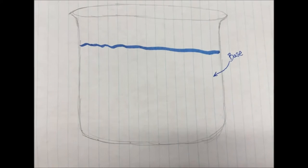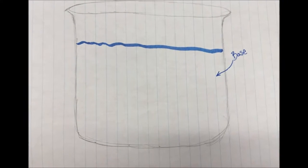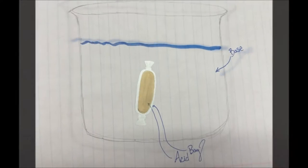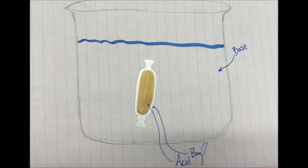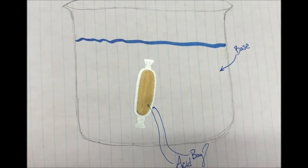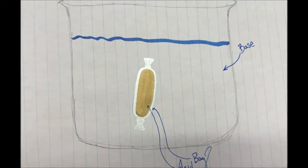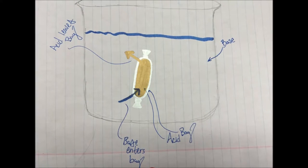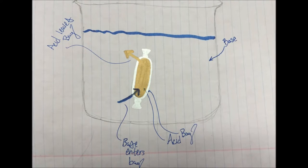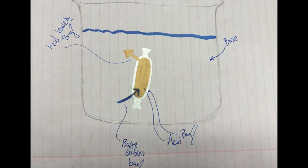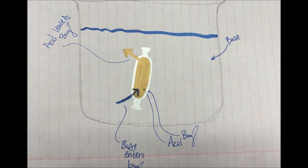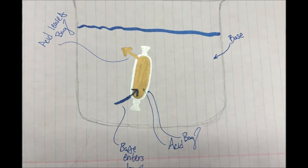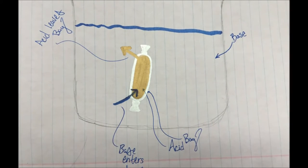Let's do a quick review of what we've done today. At first we just had our blue base inside the beaker. Then we placed a dialysis bag full of acid inside the beaker of base. After that, the acid left the bag over a period of a few days and base also went into the bag, demonstrating passive transport.